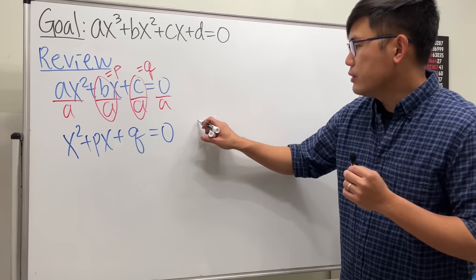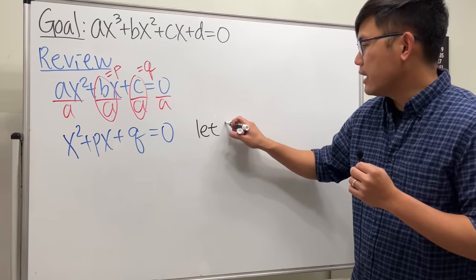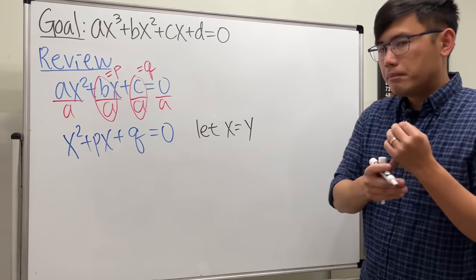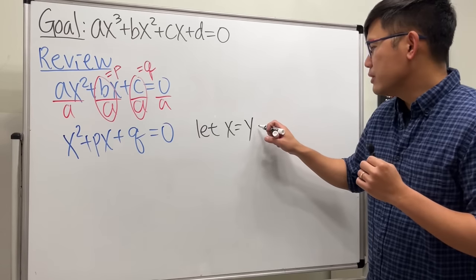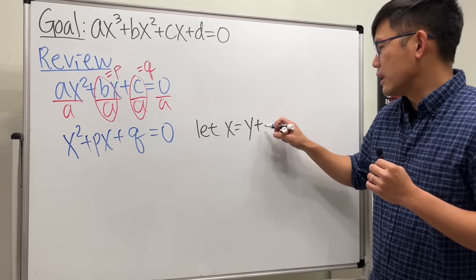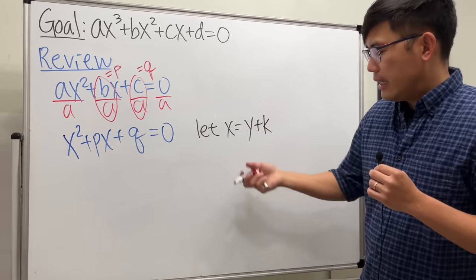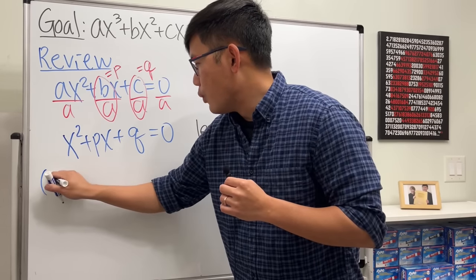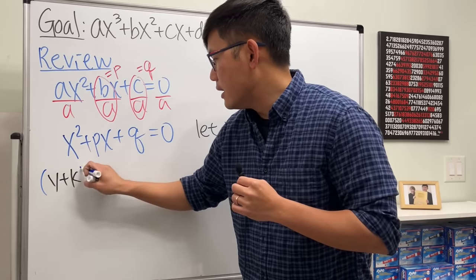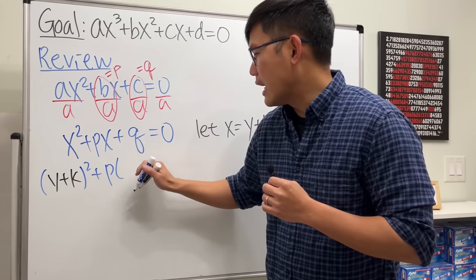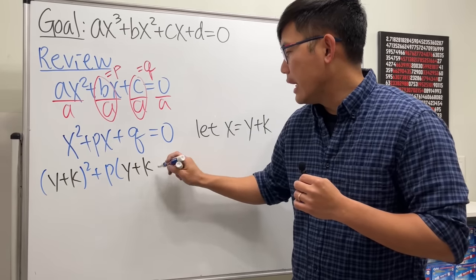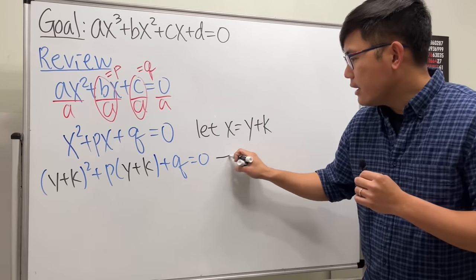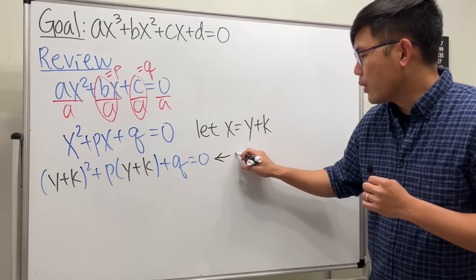To do so, I'm just going to say that x equals — let's use another variable, say y — but to move it horizontally, I'm just going to say plus k. Now let's plug in: we are looking at (y + k)² + p·(y + k) + q = 0.